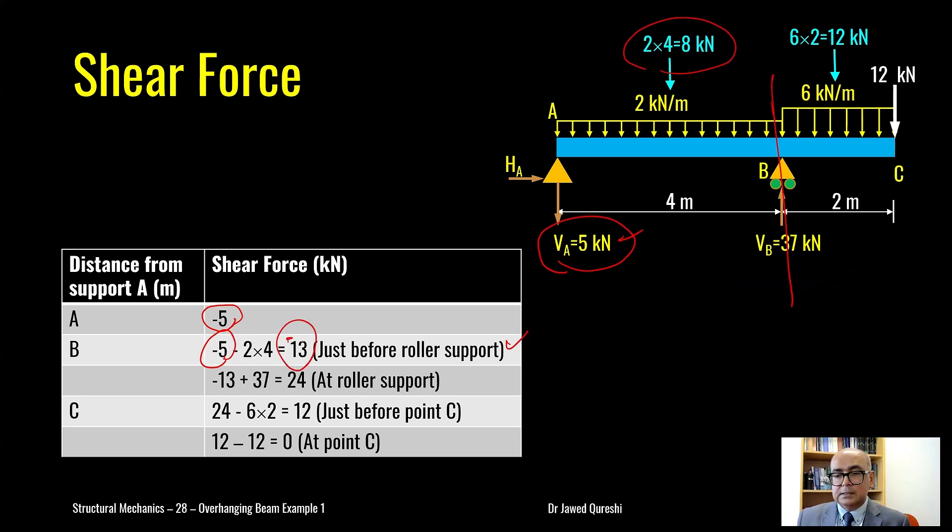So please add this sign and then just at point B I will simply add up this plus 37 in whatever earlier value I had. Earlier value I had was minus 13 and plus 37 I get 24 which is at the support. And then you move to point C but just before the point load which is this point where you subtract this loading 6 times 2. So 24 take away 6 times 2 I get 12. Then at point C where you will add this downward load. So when you add this downward load in total you get 0 shear force at the end.